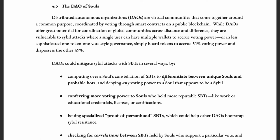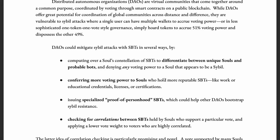Moving on to DAOs — decentralized autonomous organizations. Usually voting in DAOs is based on tokens held by wallets, and wealthy people or institutions can buy up a majority of tokens to sway decisions in their favor. SBTs can help by checking the correlation between SBTs held by souls who support a particular vote and applying a lower vote weight to voters who are highly correlated. This way we can ensure that the same person or institution does not sway the result in their favor. We'll discuss DAOs, Sybil attacks, and SBTs as a solution in another video.